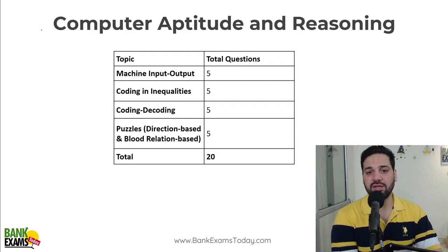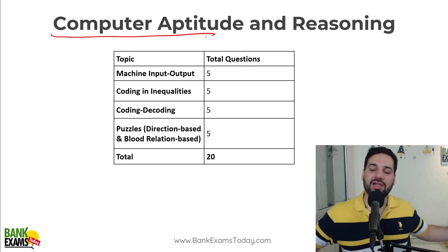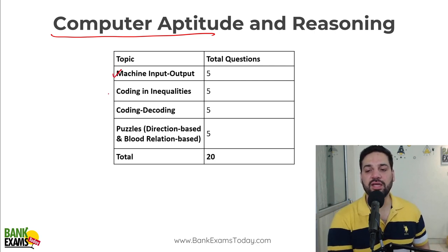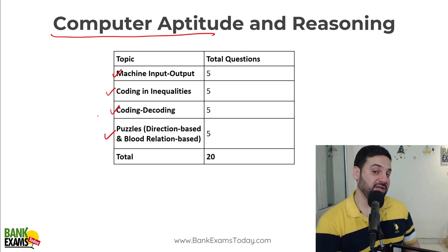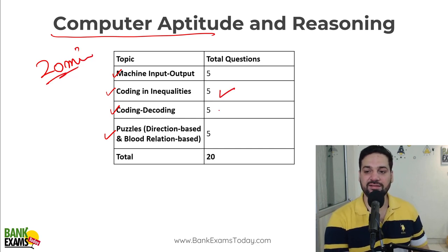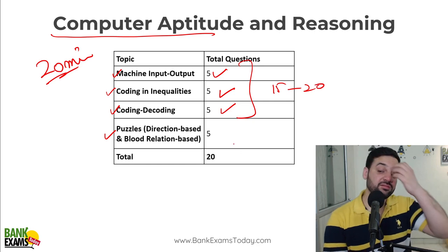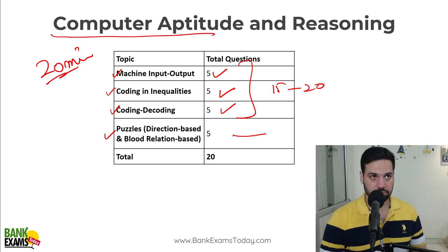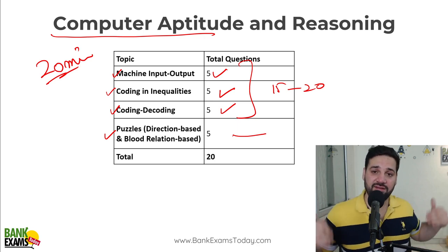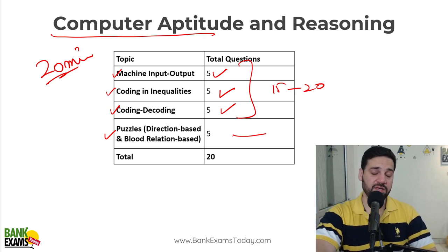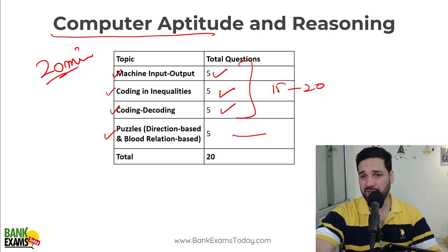Moving to computer aptitude and reasoning: the section name is computer aptitude, but last year the exam had full reasoning content. Last year it included machine input-output, coding in inequalities, coding-decoding, and puzzles. You have to do it in 20 minutes — it may take extra time. Inequalities and coding-decoding you can do in 15-20 minutes, but puzzles may be harder. If you haven't studied reasoning and reasoning comes in the exam, you won't be able to do it. So practice reasoning before the exam. There is confusion among students — just do reasoning, and if time permits, read basic computer aptitude as well.